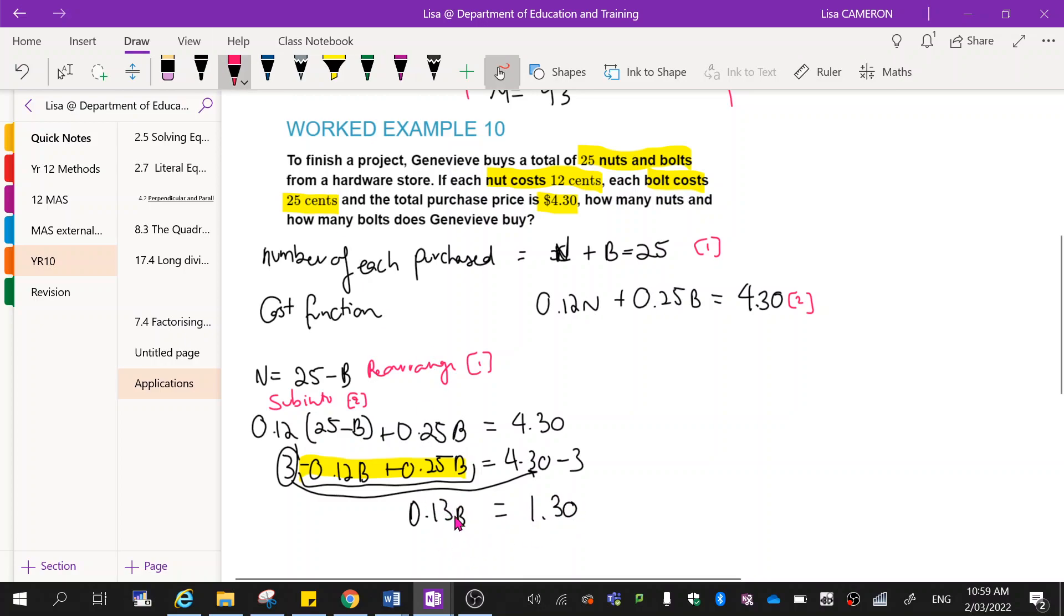Okay, so when I group these together, I'll end up with 0.13b is equal to 1.30. Then I'll take this across by division. So then I'll be left with b equals 10. Okay, and now to find the number of nuts, I just substitute it back into this function. So n equals 25 minus 10. So n equals 15.